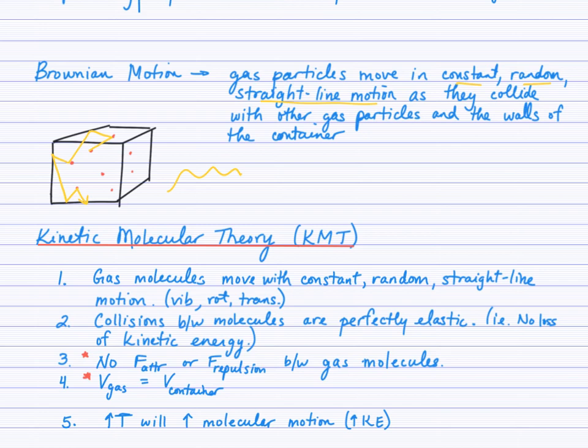So this leads us into then the theory that explains the movement and behavior of gases. So number one relates closely then to the Brownian motion that the gas molecules move with constant random straight line motion, thinking that they are vibrating, rotating, and translating on this pathway. Secondly, we've talked about there being collisions between the particles. Well, the second point here of kinetic molecular theory is that the collisions are perfectly elastic. Now, if you have a bit of a physics background, you'll recognize that. But if you don't, not to worry. It just means that as those particles bounce off one another, they haven't lost any of their energy of motion. So they continue to move as they were, just heading off in a different direction.